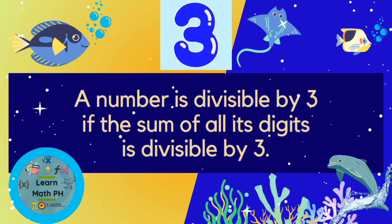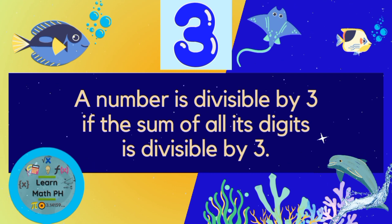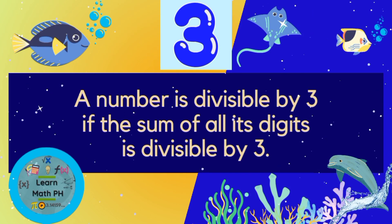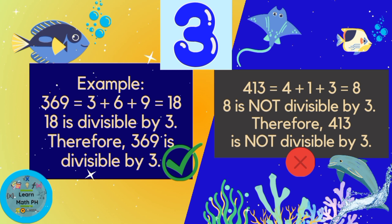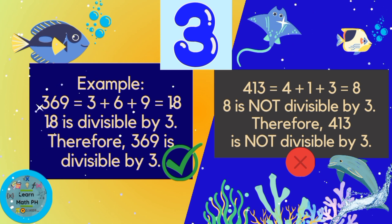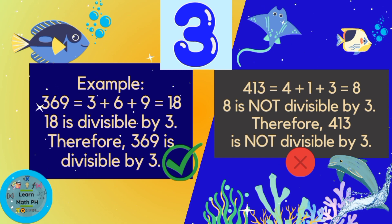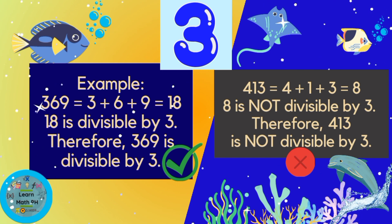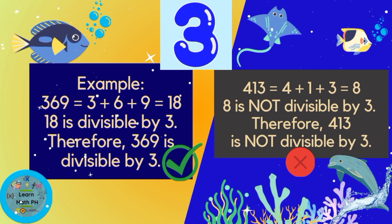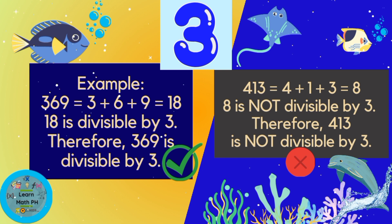A number is divisible by 3 if the sum of all its digits is divisible by 3. Sa isang number, malalaman mo kung divisible siya by 3 kung i-add mo ang digits at divisible by 3, ibig sabihin ang original number ay divisible by 3 din. Halimbawa, the number 369: 3 plus 6 plus 9 is equal to 18, and 18 is divisible by 3. Therefore, 369 is divisible by 3. Pero yung 413 is not divisible by 3 kasi kapag i-add natin ang digits, 8 ang sum, and 8 is not divisible by 3. Therefore, 413 is not divisible by 3.